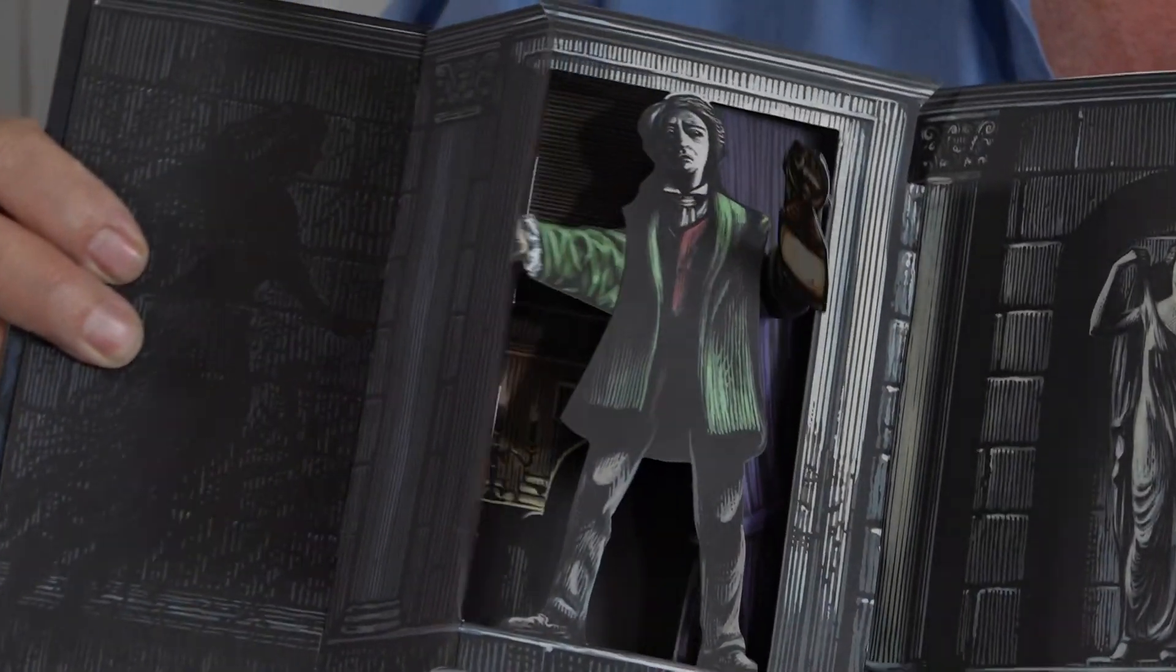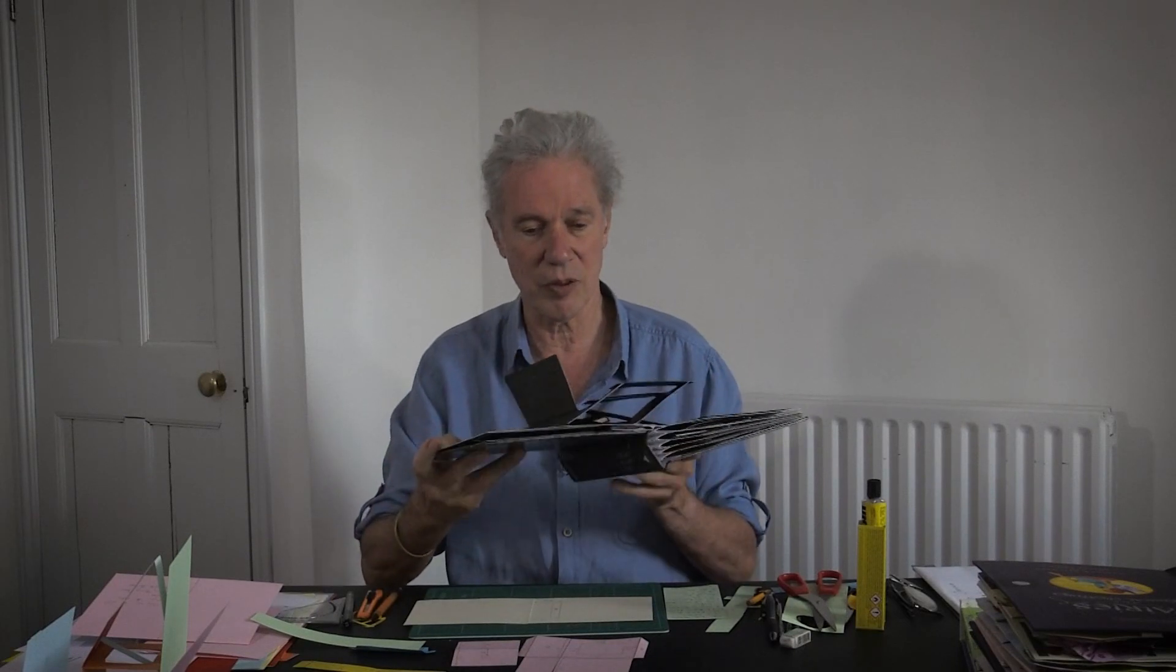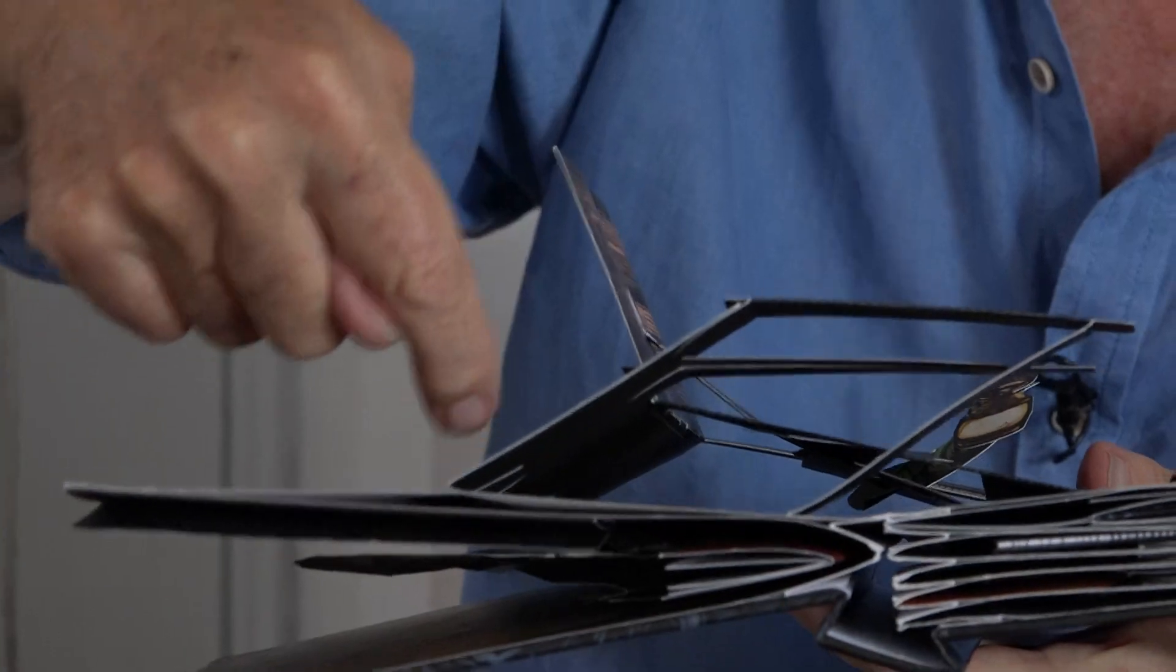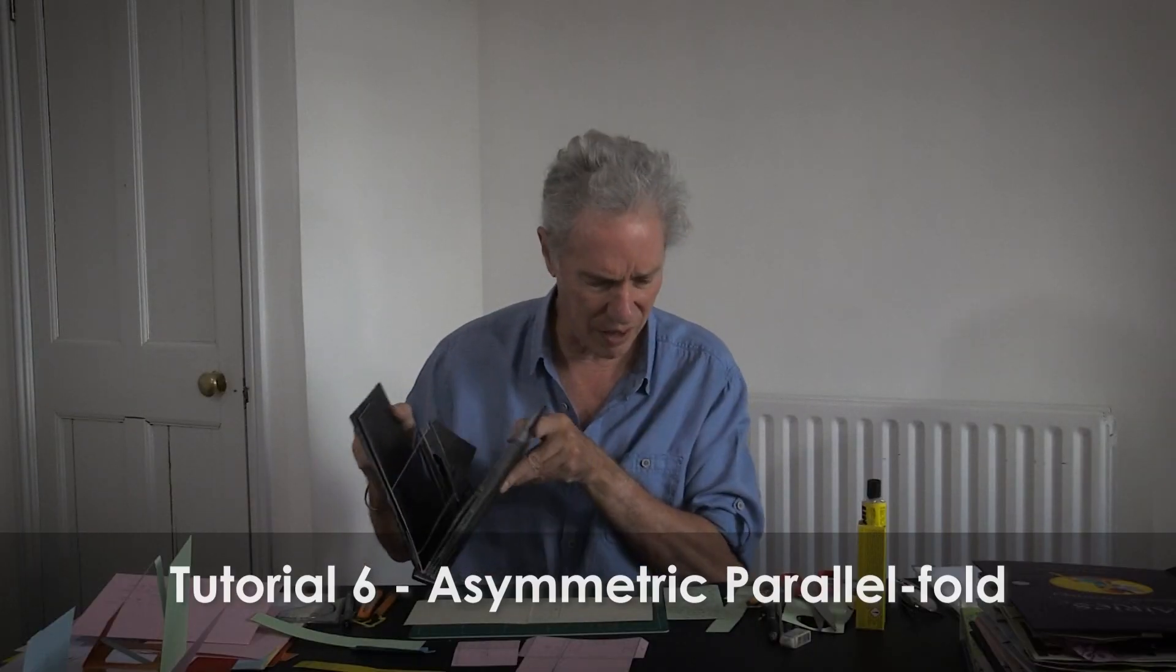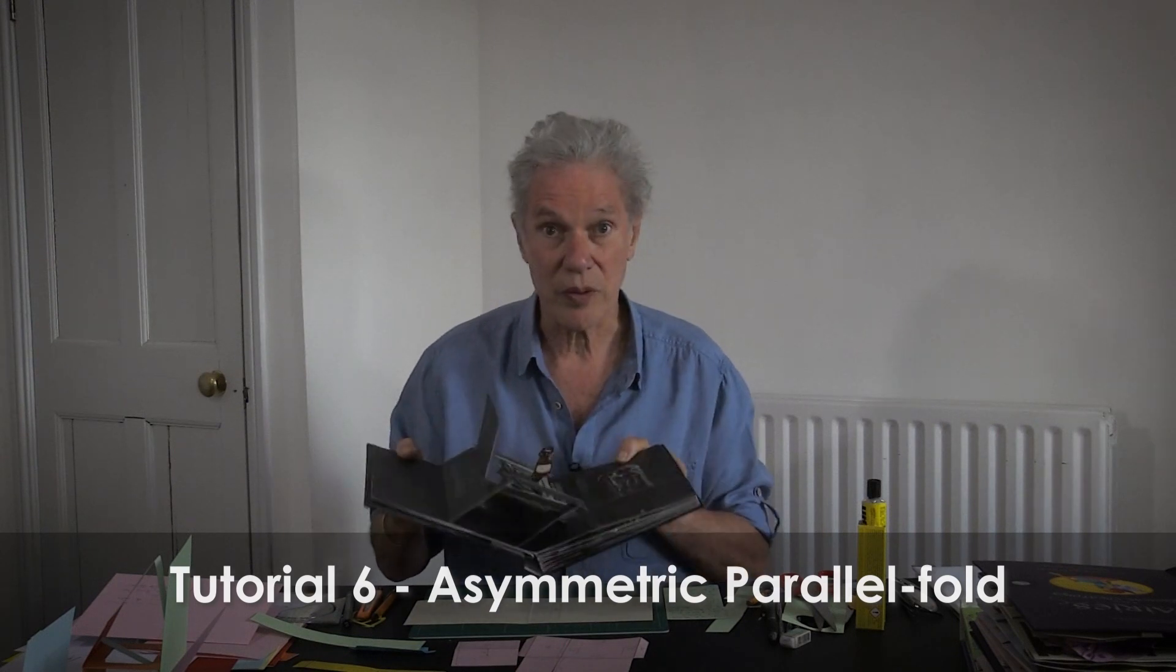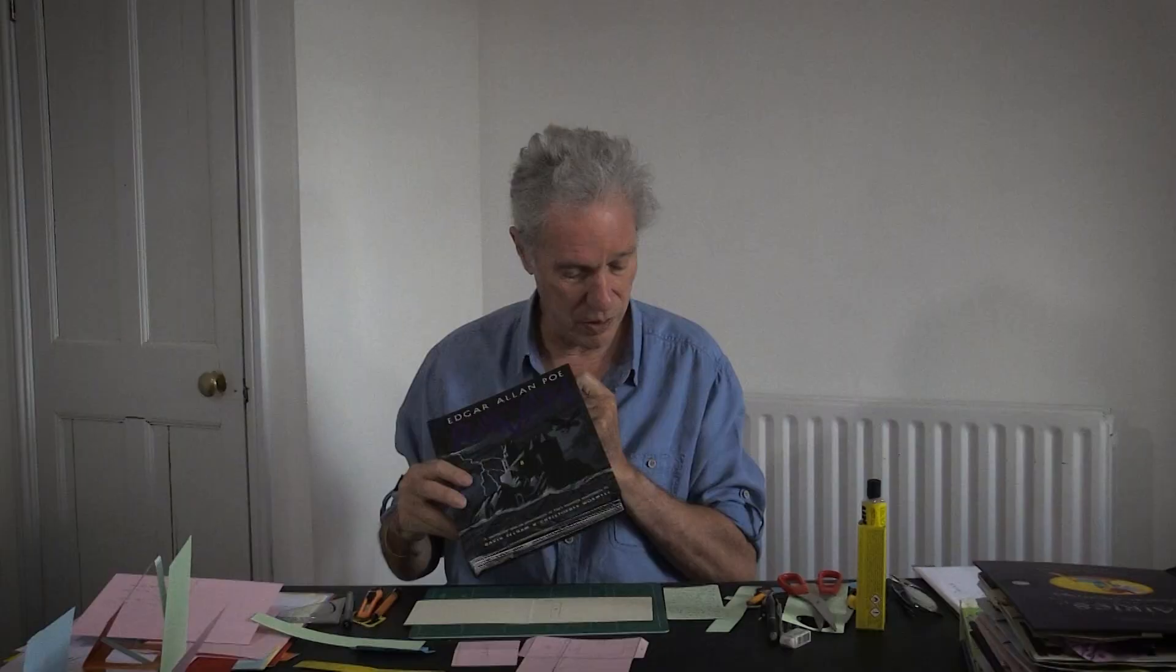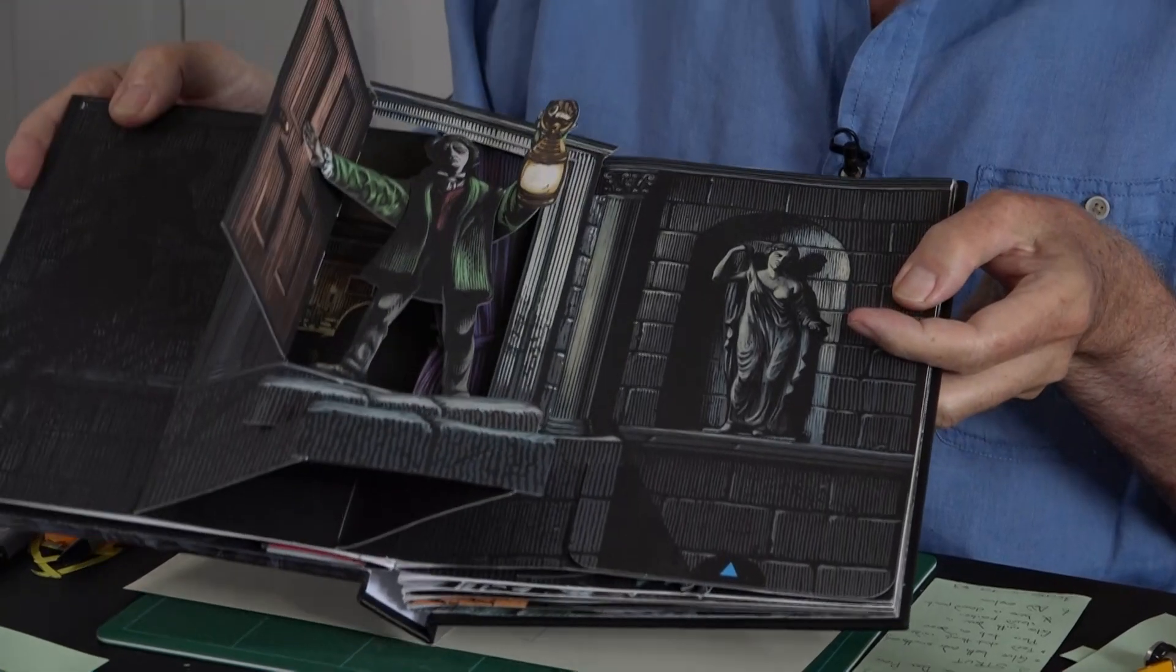If you look at it end on, you can see the whole thing. It's not actually a parallelogram, it's an asymmetric parallel fold. Asymmetric parallel folds are in tutorial six. This is related to tutorial 43, which was a hand unfurling.